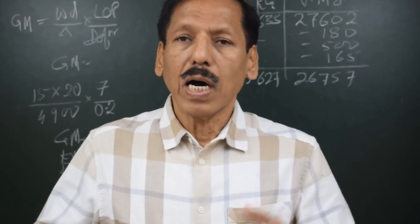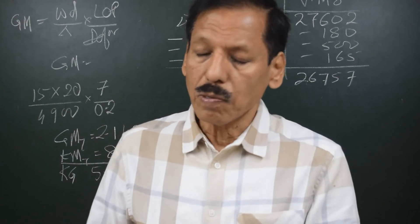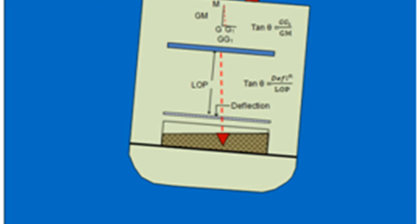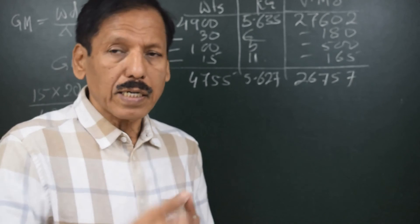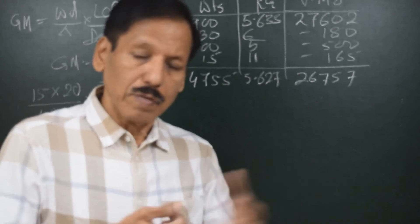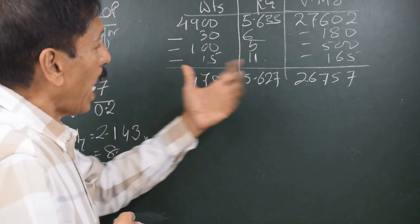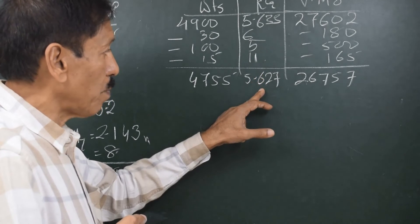Dividing 26,757 by 4755 gives a lightship KG of 5.627 meters. To summarize: in the inclining experiment, for small angles of list GG1/GM = tan theta; using the pendulum and scale, deflection/LOP = tan theta. These are combined to get GM at the time of experiment. KM minus GM gives KG at experiment time, which is then converted to solid KG using the free surface correction. Finally, removing the weights by moment calculation gives the lightship KG as 5.627 meters.